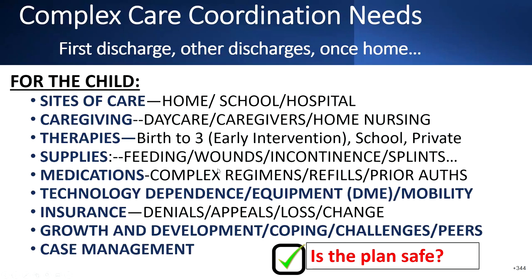Complex care coordination needs: the first discharge, the next discharges, and then once home — how do we take care of these kids? Things to consider include the sites of care: home, with its own unique challenges; how we reintegrate kids into school; and how we take care of them in the hospital and get them back home.